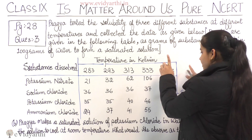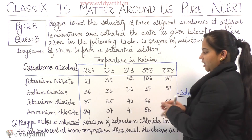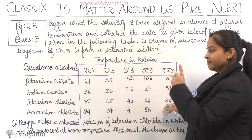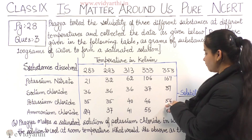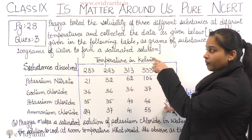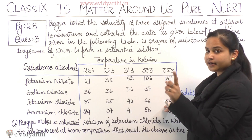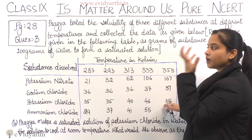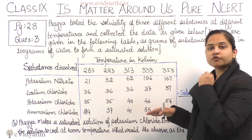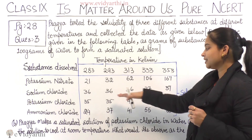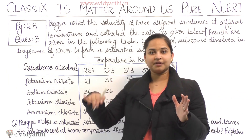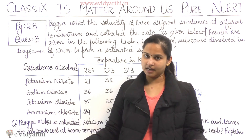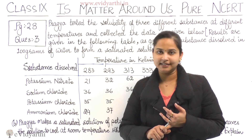At 353 Kelvin, 54 grams of potassium chloride was required to dissolve in 100 grams of water to form a saturated solution. This data shows that as temperature increases, the solubility of the salt also increases. So solubility of the salt increases with temperature.